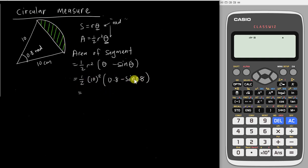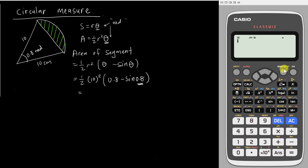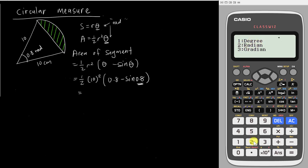When I want to key into the calculator, I have a small problem — this angle is already in radian, but my calculator shows 'D' on top, which stands for degree. So when you key in sine 0.8, you need to make sure your calculator is in radian. You need to press Shift + Menu to go to Setup, select number 2 to change the angle unit, then select number 2 again to change to radian.